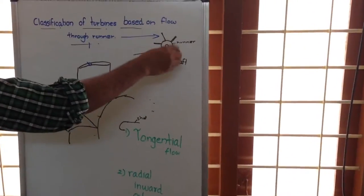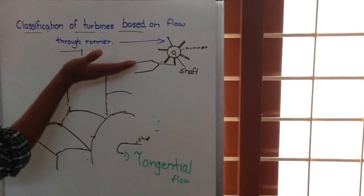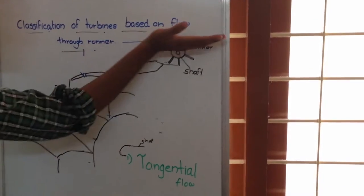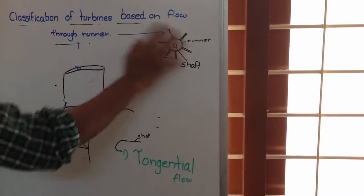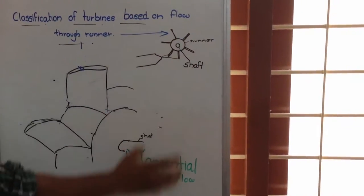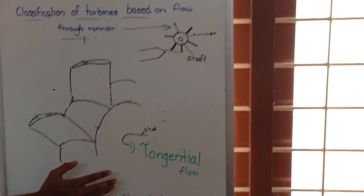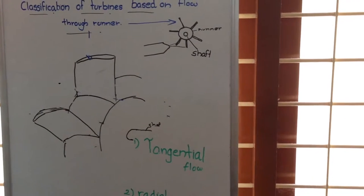In tangential flow turbines, the water will be moving tangential to the runner. Such turbines can be called tangential flow turbines.